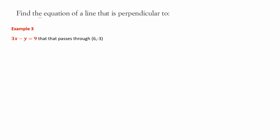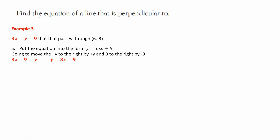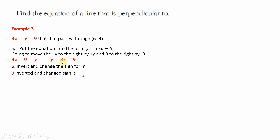Example 3: equation 3x minus y equals 9, passing through the point (6, negative 3). We have to put the equation into y equals mx plus b form, so y has to be on one side by itself. Moving the minus y across gives plus y, and moving the 9 across gives minus 9. So 3x minus 9 equals y, or y equals 3x minus 9. Now we have the right form. Invert and change the sign for m — our m is 3, so inverted and with changed sign it becomes negative one third. Write the equation: y equals negative one third x plus b.